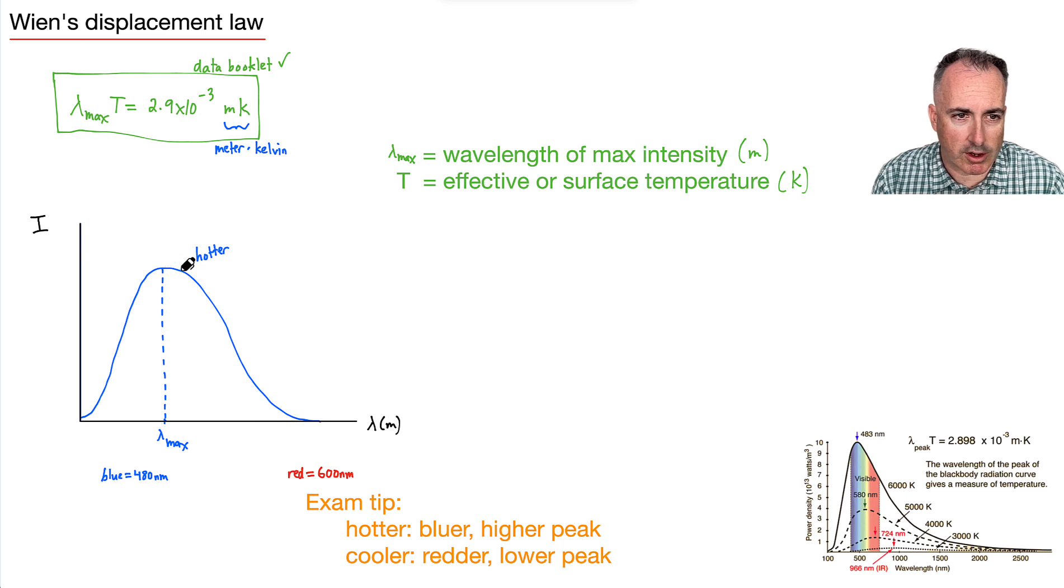And do you notice then? So things that were hotter, I wrote it blue because, you know, blue is kind of hot. But if I take something that's cooler, for example, so what happens with that? Well, remember, something that's cooler would go down and to the right.